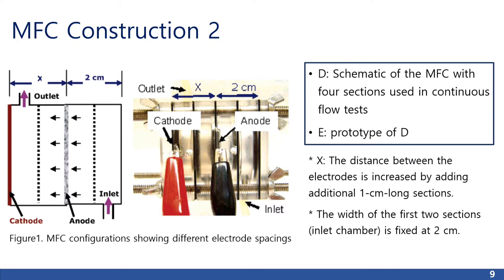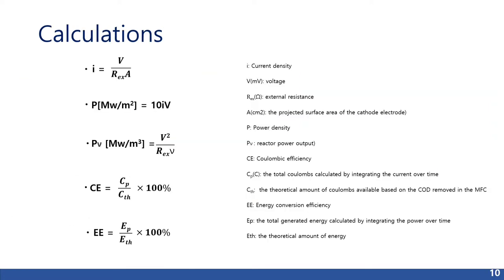In continuous flow experiments, the cathode was placed at different distances from the anode by adding 1 cm long sections in the reactor. The flow was directed through the anode toward the cathode, with the distance between the entrance wall and the anode fixed at 2 cm. The electrode spacing x, defined as the distance between the anode and cathode, was set at 1, 2, and 3 cm. This is the calculation formula used in this paper.